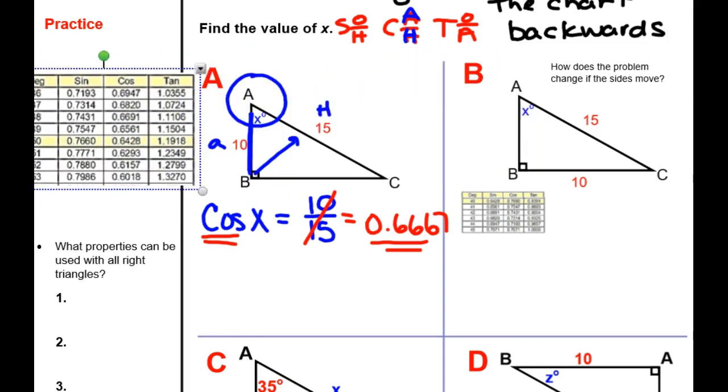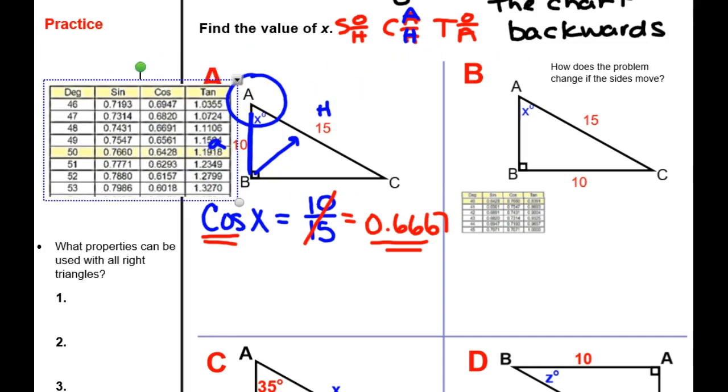I made the chart and if I look at my cosine column for that value, 0.6667 closest right there, I think X is about 48 degrees. And that's all you have to do.